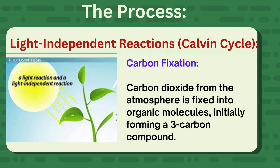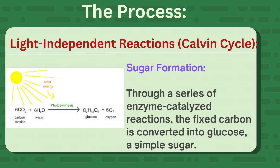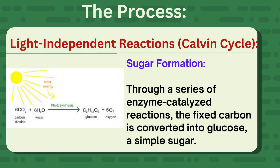Light-independent reactions — Calvin cycle. Carbon fixation: carbon dioxide from the atmosphere is fixed into organic molecules, initially forming a three-carbon compound. Sugar formation: through a series of enzyme-catalyzed reactions, the fixed carbon is converted into glucose, a simple sugar.